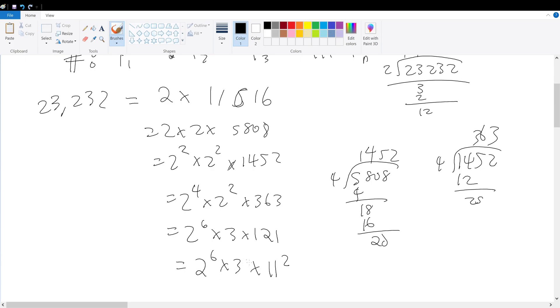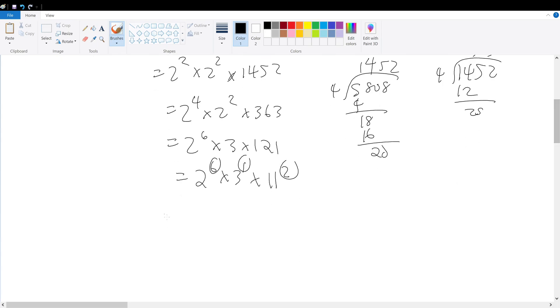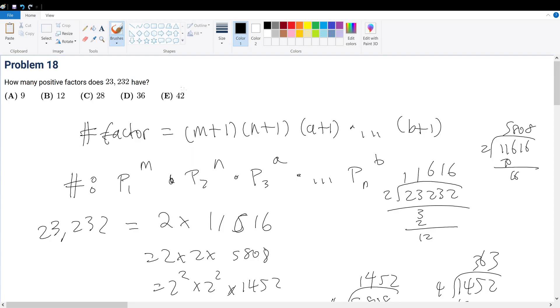So with this, right, we have prime factored out. So 6, 1, 2. So direct application of the theorem tells us it's 6 plus 1 times 1 plus 1 times 2 plus 1. That's our answer. So that's 7. That's 2. That's 3. That's 6 times 7 is 42. So our answer should be answer choice E.